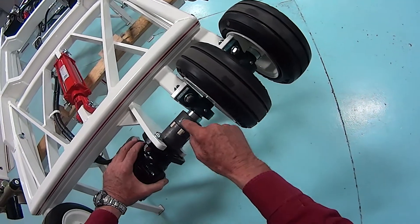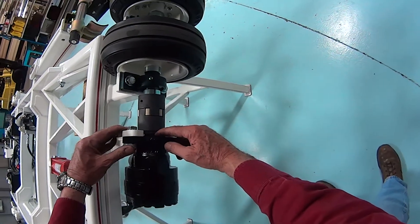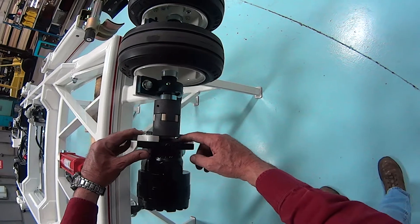You would then undo the set screw here, the set screw here, and watch for the stack up of washers here. We want to make sure those remain the same.